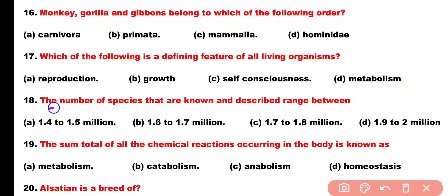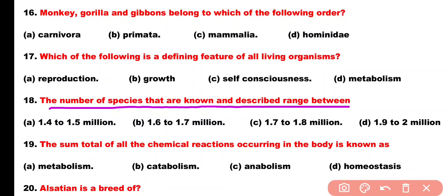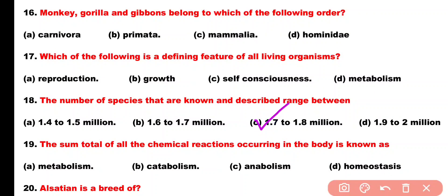Question number 18. The number of species that are known and described range between: Option A: 1.4 to 1.5 million, Option B: 1.6 to 1.7 million, Option C: 1.7 to 1.8 million, Option D: 1.9 to 2 million. Correct answer is Option C. The number of known species ranges between 1.7 to 1.8 million.